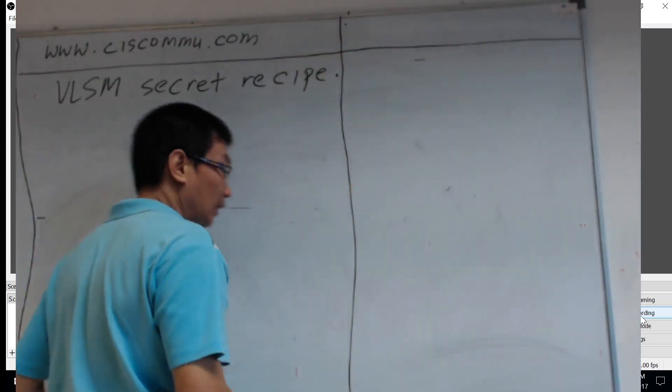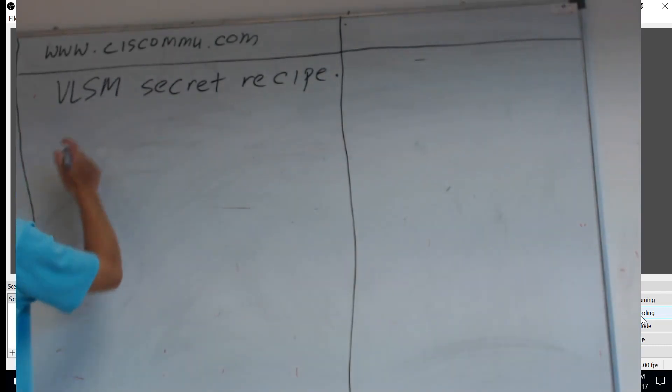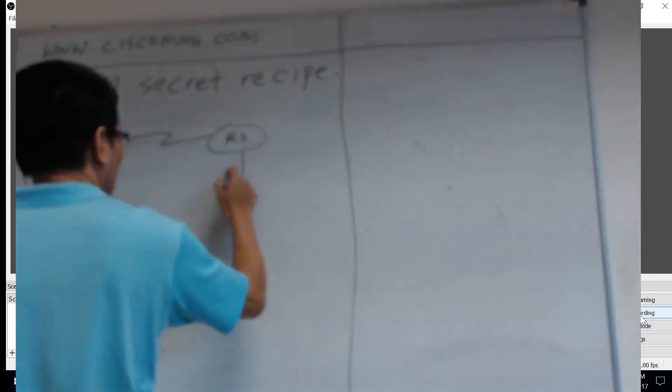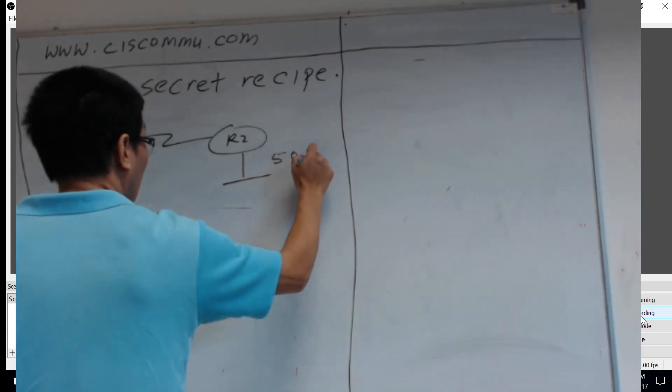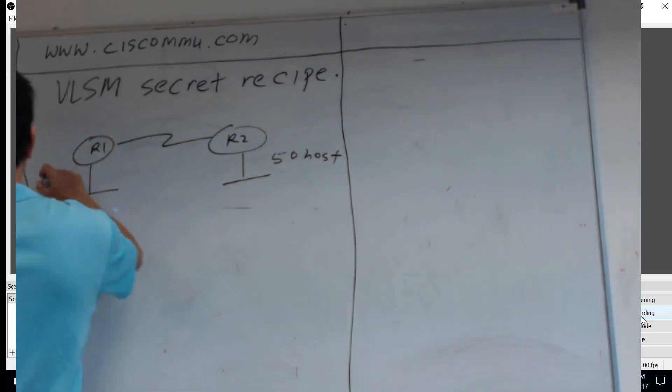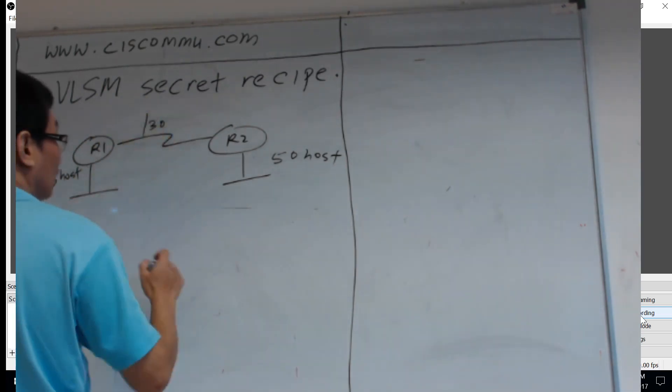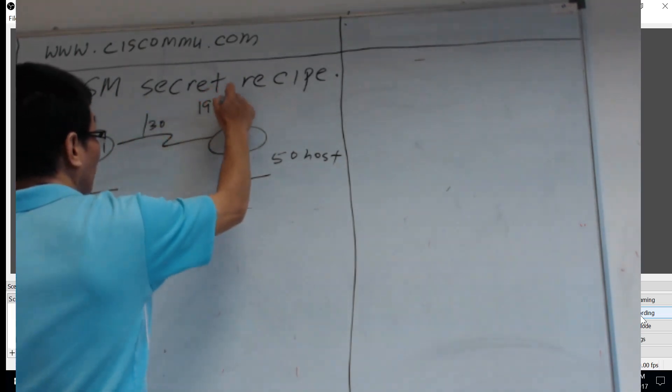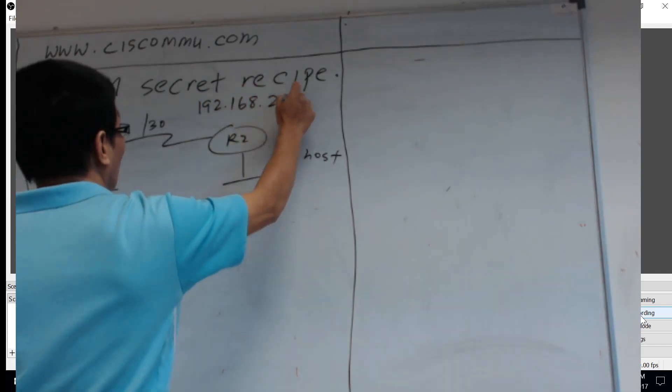Now, round one. How many hosts here? Here is 50. Here, how many hosts? 30 hosts. Or let's say make it 25 hosts. And here, it's 2 hosts. Everything must start with 192.168.2.x.